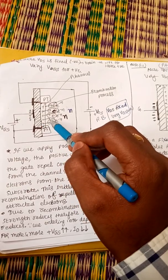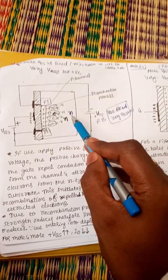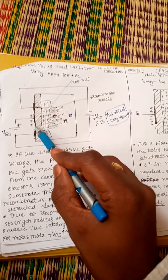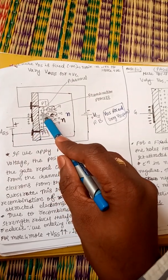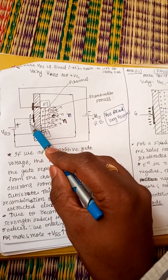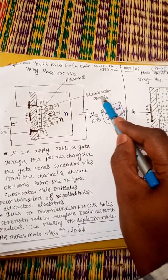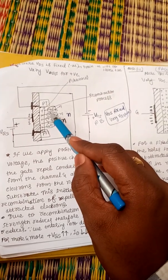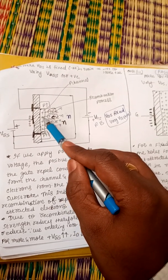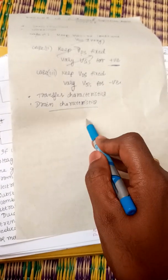In N-type material, the majority carriers are electrons. Those electrons get attracted towards the positive potential of the gate, and the holes situated in the channel get repelled due to this positive gate potential. Electron-hole recombination occurs, so the hole concentration in the channel starts to decrease, causing the drain current to decrease.